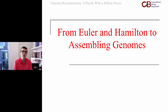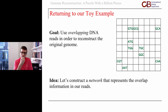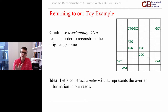Remember, our goal was to use the overlapping reads taken from a DNA data set in order to reconstruct that original genome. We needed to overlap these and get a contiguous original genome. Our idea is to use a network to represent this overlapping information — it's a great way of visualizing the connections between things, and our connections are going to be the overlaps.